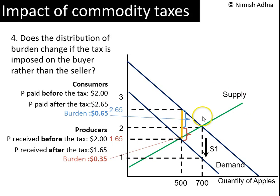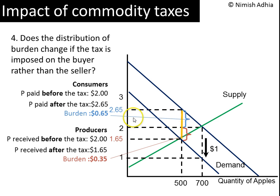Here too, the position of the tax wedge on the x-axis tells us the quantity sold after the tax. The top end of the wedge tells us the price that buyers pay after the tax. The bottom end tells us the price that sellers receive after the tax. The top length of the wedge tells us the consumer's burden of the tax. So if we are not told whether a commodity tax is imposed on the buyer or the seller but merely shown this tax wedge, we can obtain all the information that we need.